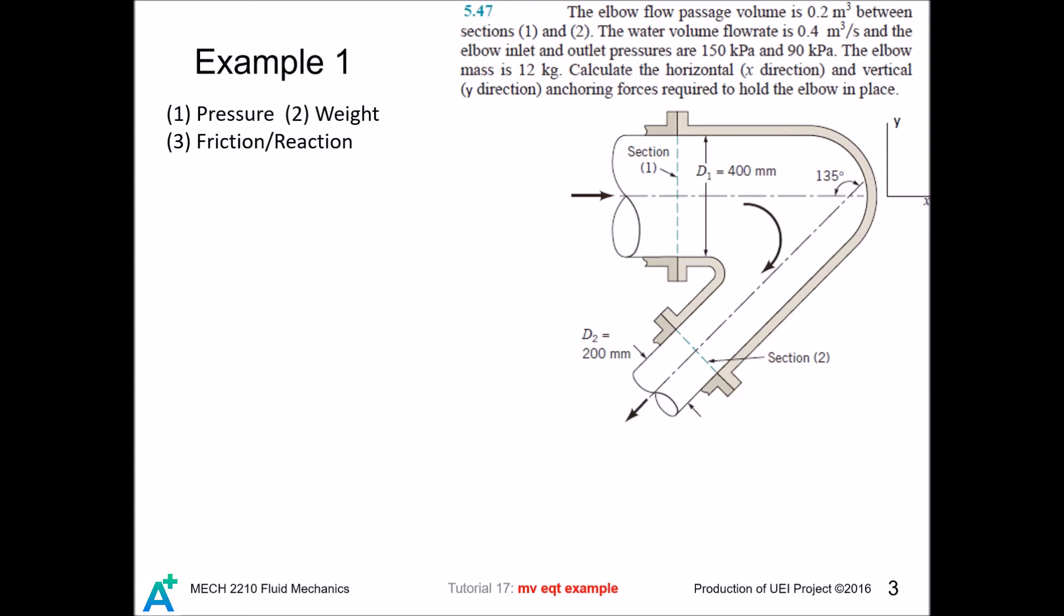Here is our first example. This example is quite similar to the first example in the last tutorial. The difference is that we have to deal with both the x and y directions. So let's quickly draw the free-body diagram for the control volume and the elbow.